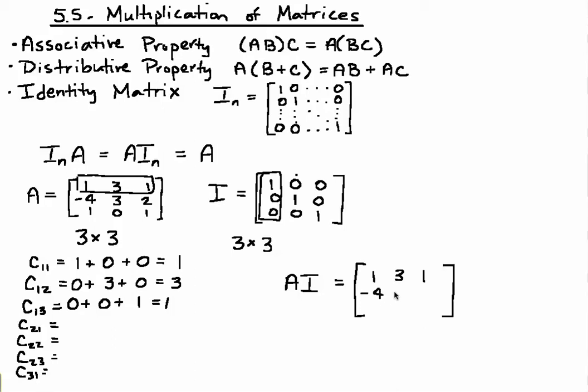The remaining entries will be the exact same: negative 4, 3, and 2, 1, 0, and 1. So anytime we multiply by this identity matrix, which consists of 0s and 1s, we will get the same matrix that we started with.